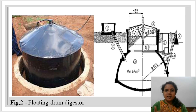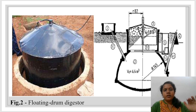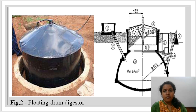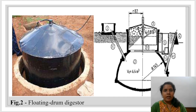By looking at the picture itself, we can understand how the Floating Drum Digester works. We put the waste through the inlet, and it flows through the inlet pipe, then falls into the digester. We might think it is like a fixed drum digester, but it is different because it consists of a partition wall inside the digester.